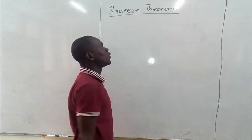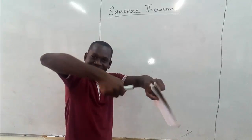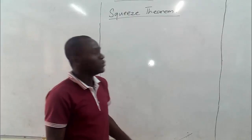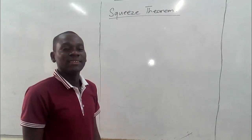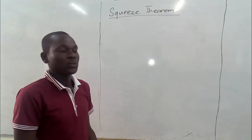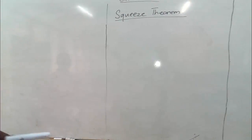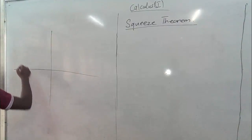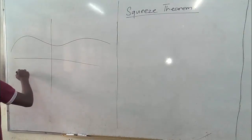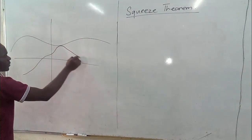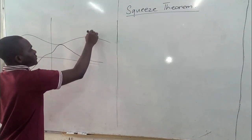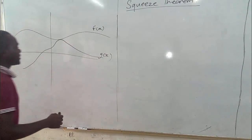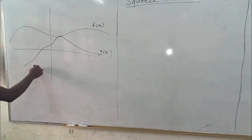We call it the Squeeze Theorem. You know what squeeze means — you squeeze something to drain or extract something from it. We use that same idea here to find the limits of certain unknown functions. So taking a function, let's say we have a graph here, and we have one function this way, and we will have another function this way. Let's call the first function f of x and the second function g of x.